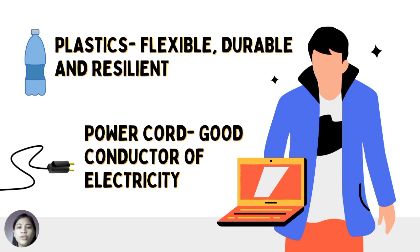Plastics are flexible, durable, and resilient. That's why they are good materials for storage containers. But they are extremely resistant and persist for hundreds of years. Did you know that a plastic water bottle can persist for 450 years and disposable diapers for 500 years? Some materials found at home like the power cord of the rice cooker or extension wires are made from copper wires. These materials are good conductors of electricity. Electrical conductivity is the ability of metals to conduct heat and electricity. Hard materials like wood can be used to make tables, chairs, and walls of the house. They are also durable and tough.